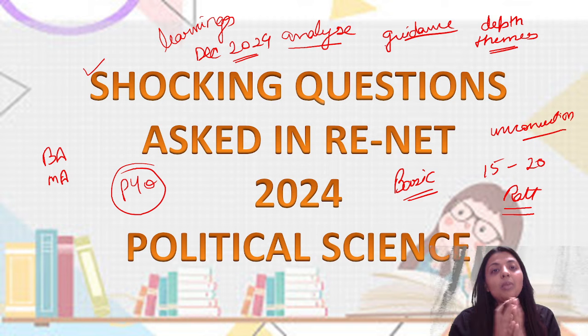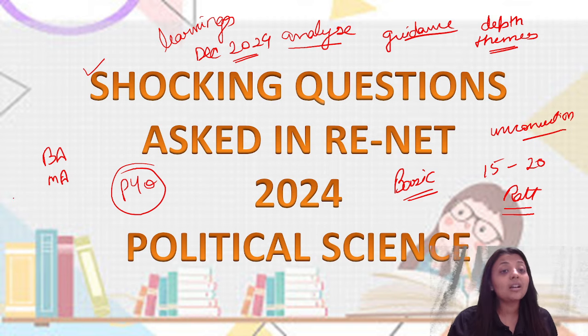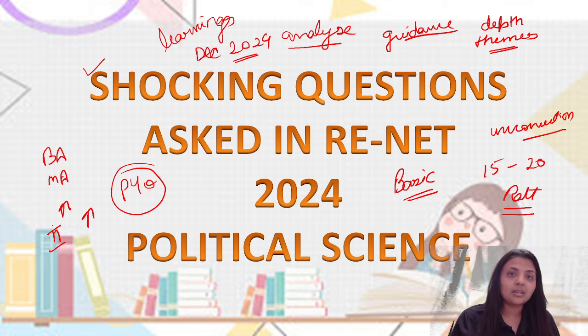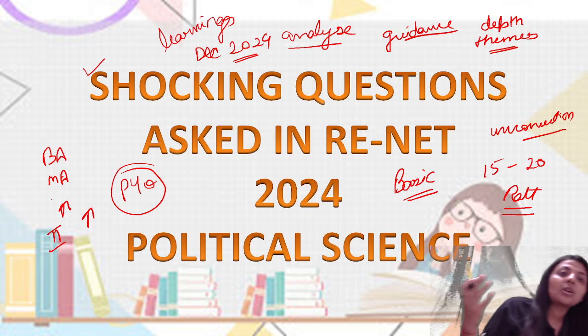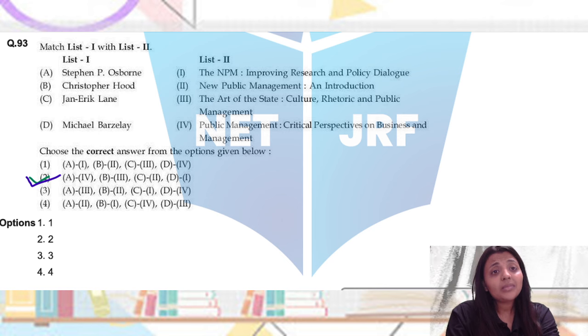But it is so much that children don't have anything to do with all the options. You cannot do anything at this level from conventional and basic sources. So these are some of the shocking questions that I feel were asked in Renet Political Science. It was not only that the level of the paper was higher, especially shift 2 if I talk, the cut-off is also higher. Very surprising, right? So this is why we have a lesson that the questions are going to be at the same level that you can handle.